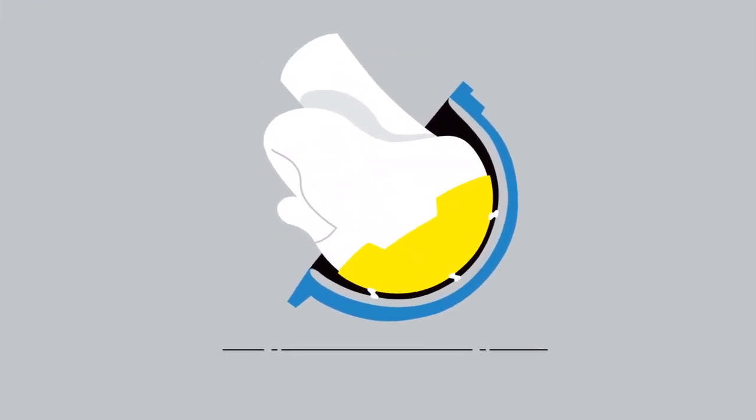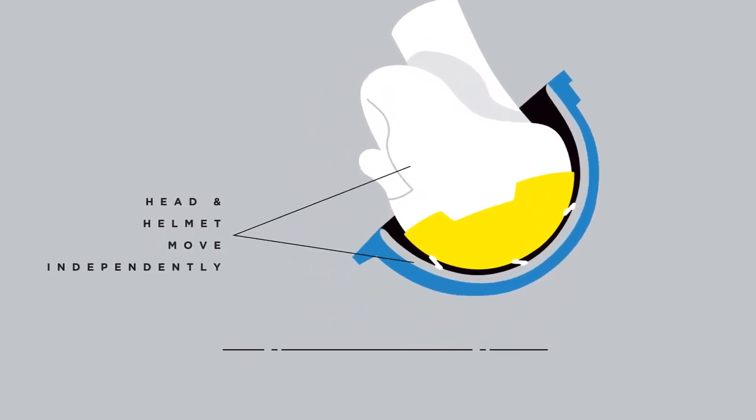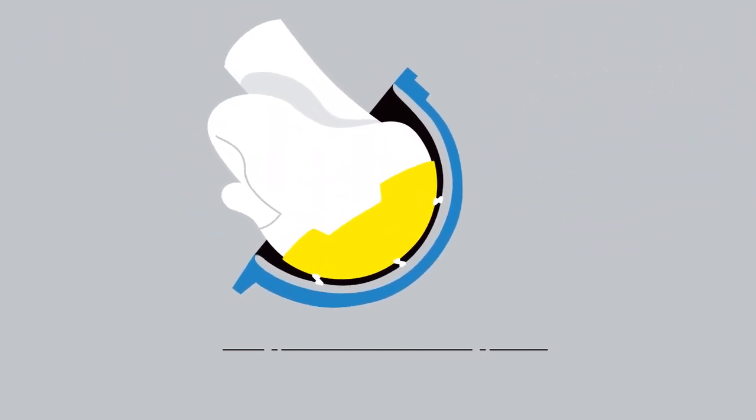When the MIPS low friction layer moves during the critical milliseconds of an impact, it allows the helmet to rotate independently from the head. This can reduce and redirect some of the rotational motion that would otherwise be translated to the brain.